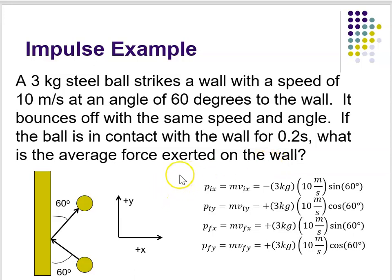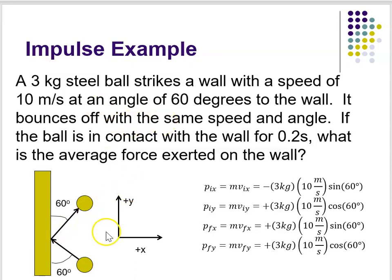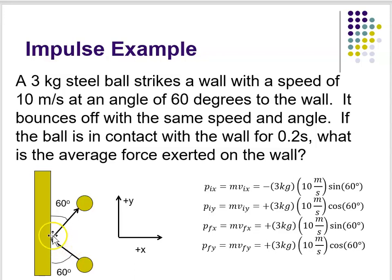So remember that whenever you're faced with a physics problem, a nice thing to do first is to draw yourself a picture. Here I've shown you a picture: here's the wall, and my ball is coming in, bouncing off the wall, and going out. It's at a 60 degree angle to the wall. I've chosen a coordinate system centered at where the collision is on the wall — the plus x sticks out of the wall and the plus y goes up the wall, with the origin right where the collision happens.